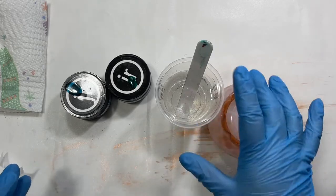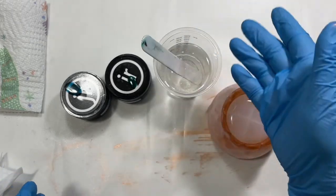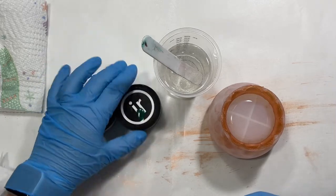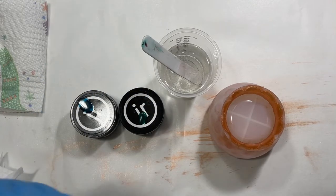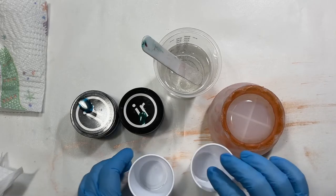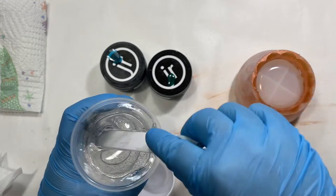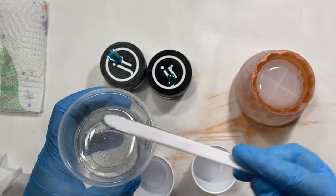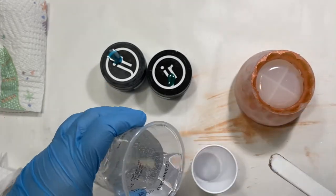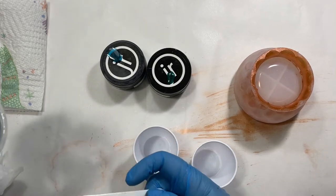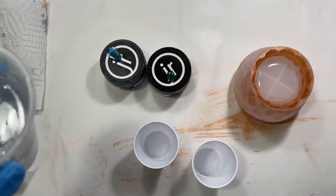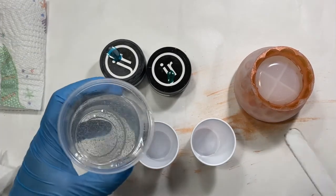All right, so I have my resin mixed up. I have about five and a half ounces there and I'm just going to make up my colors. I'm going to get two cups and do half and half. Hopefully this will fit in these three ounce cups.